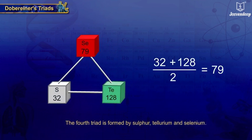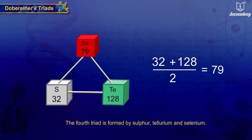The fourth triad is formed by Sulphur, Tellurium, and Selenium.